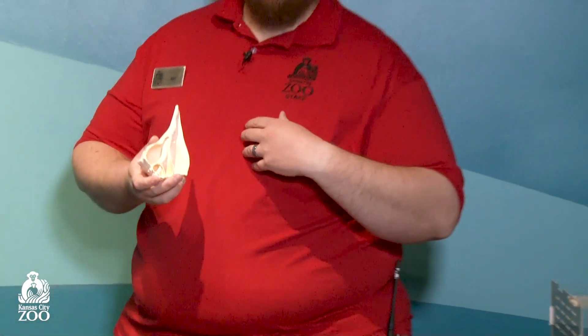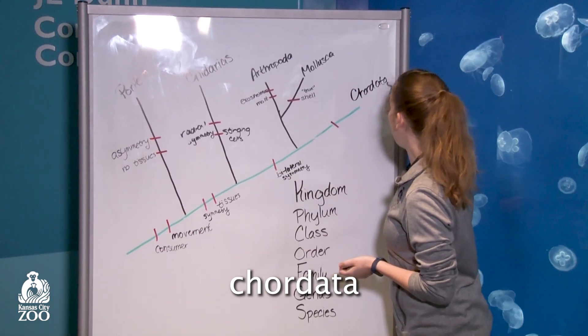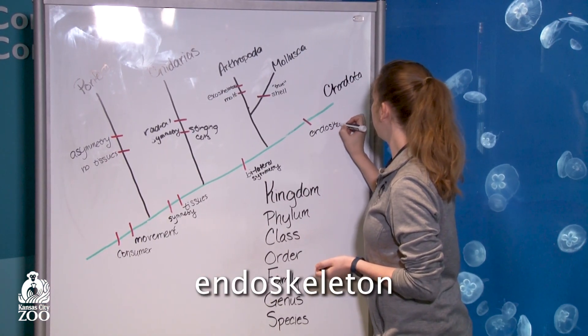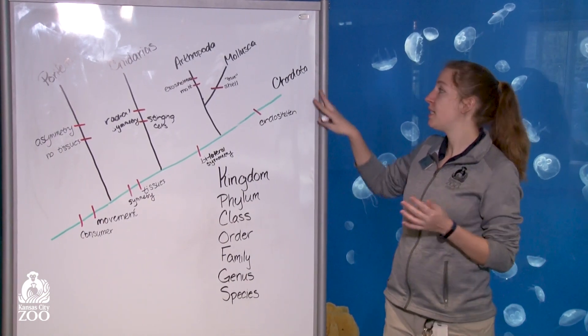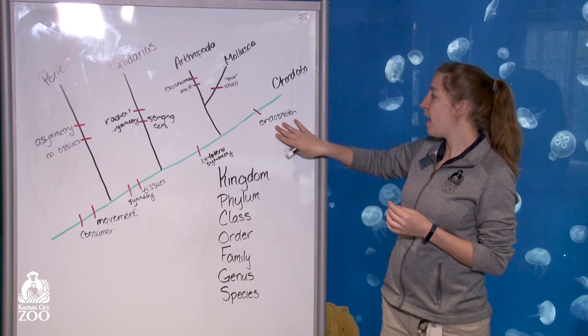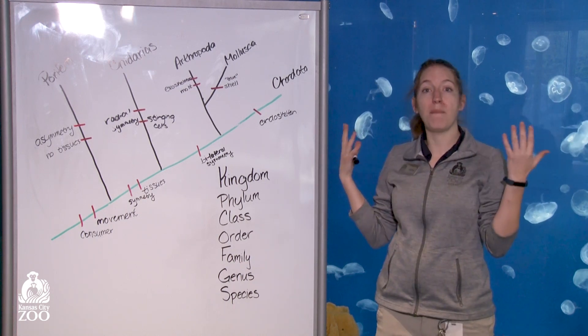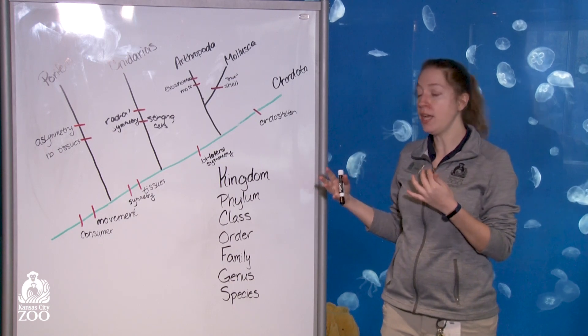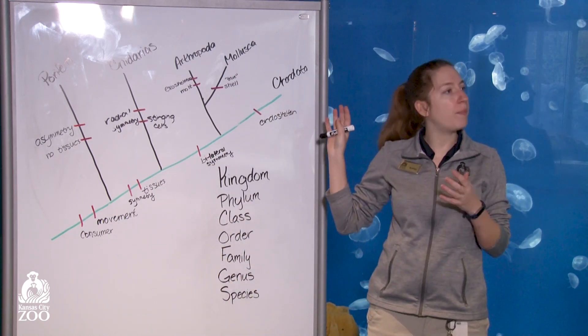Instead of having an exoskeleton, after this phylum we move into a different one. They have an endoskeleton — which is what we have — where the bones are on the inside of your body, the structure is on the inside, and it grows with you as you grow up. Our very last phylum that we're going to put on here is Chordata, and they have an endoskeleton. We're actually going to do a part two to this video to discuss Chordata more in depth. But what we see is that once that structure moves inside to the body, we get bigger animals and more complex animals. As we move up in our phylogenetic tree, we just get more complicated and complex animals.